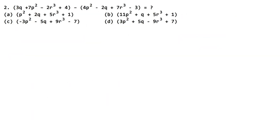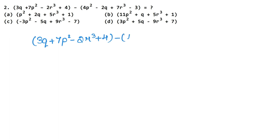Let's do the next question now. In this question, we have: 3q cube plus 7p square minus 2r cube plus 4, and we will subtract 4p square minus 2q cube plus 7r cube minus 3. So we have to write and solve this subtraction.